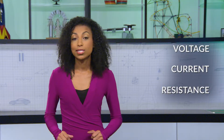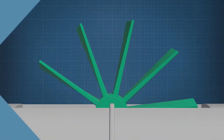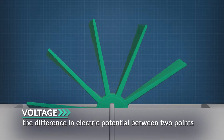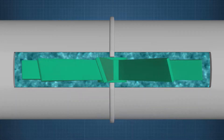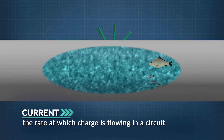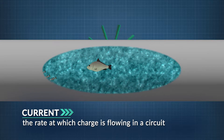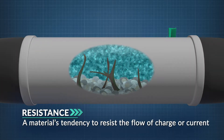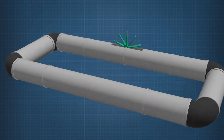The three properties that Ohm studied are voltage, current, and resistance. Voltage is the difference in electrical potential between two points — like the pressure of a water pump pushing current through a loop so the charge can be used to do work. Current is the rate at which charge is flowing in a circuit, similar to water flowing through a channel. Resistance is a material's tendency to resist the flow of charge or current, like rocks or sticks blocking a channel of water.